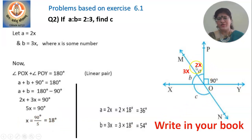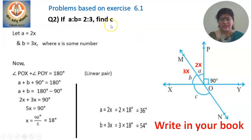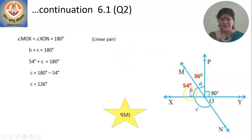Now that you have the value of X as 18, substitute it: 2 into 18 gives A equal to 36 degrees, and 3 into 18 gives B equal to 54 degrees. So we have found the values of A and B. Therefore, A is 36 degrees and B is 54 degrees.